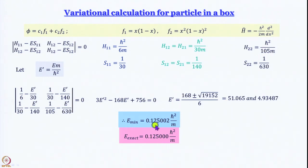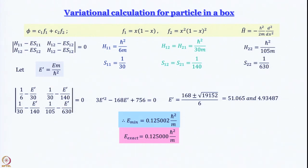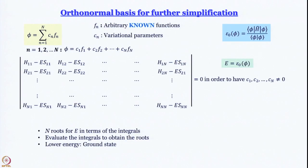Only at the sixth decimal place is there a difference between the variational minimum and the exact energy. However, just because this worked nicely for particle in a box does not mean arbitrary wave functions will work well for more complicated systems. That is why we want to discuss orthonormal basis sets.